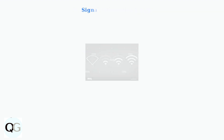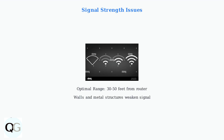Signal strength problems are the second most common cause of connectivity issues. The distance between your camera and router significantly affects connection quality. Physical obstructions like walls, metal structures, and building materials can significantly weaken Wi-Fi signals. The optimal range for most Eufy cameras is within 30 to 50 feet of your router.